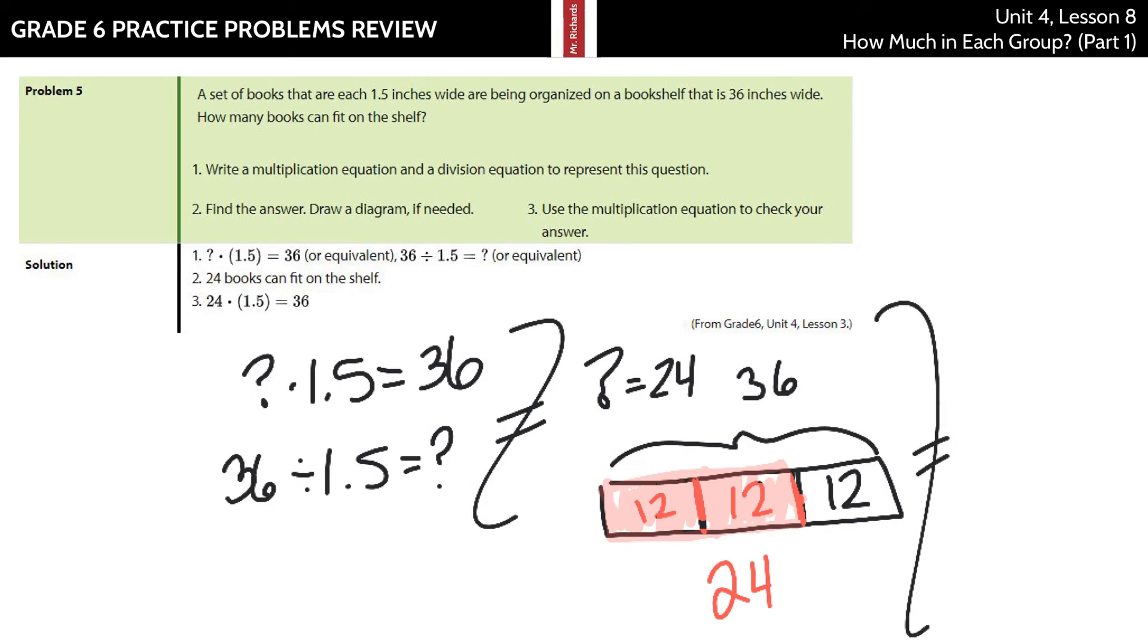Last step, check using the multiplication. So what times one and a half was equal to 36 was the idea. If I put in 24 times one and a half, does that equal 36? Sure enough, it does. 36 equals 36. We're good to go.